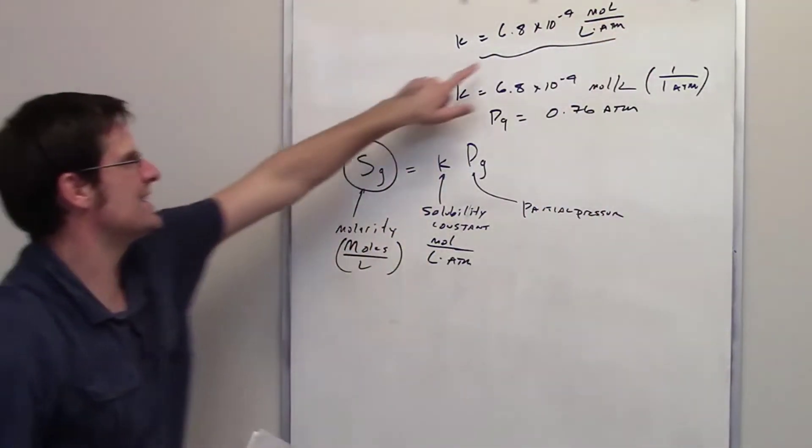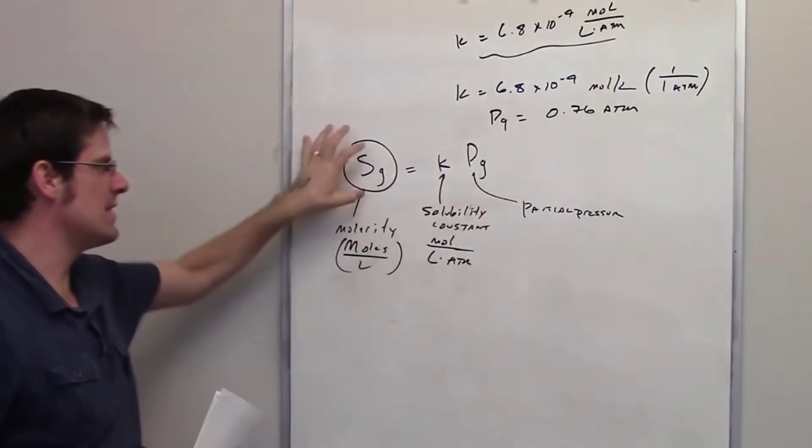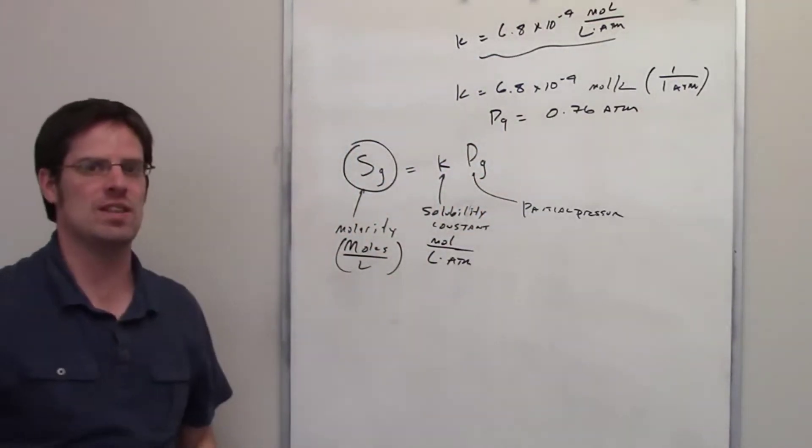So really all you have to do is take k, put it in here, take the partial pressure, put it in for there, and then solve for the concentration. And that will give you the answer.